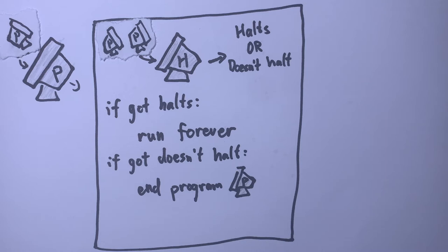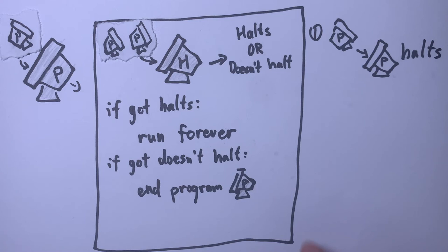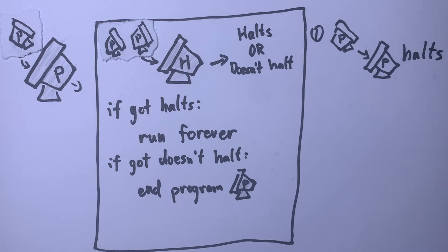If P halts on its own source code, then these instructions say we should run forever. In other words, when we execute P with input P, it runs forever. But we just assumed that P halts on P, so this is a contradiction.